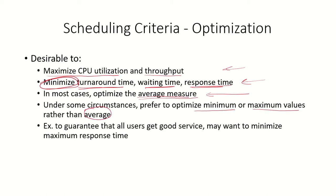For example, if we want to guarantee that all users get good service, we may want to minimize the maximum response time — that is, whatever was the maximum response time of any process, we might want to minimize that. So here we are not talking about average values, but about minimizing or maximizing these extreme values.